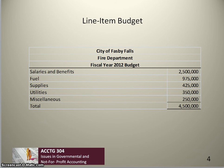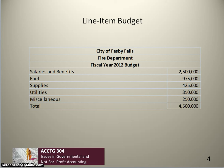Looking at our fire department, if it were to adopt a line-item budget, it might look something like this — total appropriations broken down by salaries and benefits, fuel, supplies, utilities, miscellaneous, and the total. The advantage of a line-item budget is that it's very easy to use throughout the year. When it comes time to purchase supplies, it's easy to look in the supply account and determine whether there are sufficient appropriations remaining to make a proposed purchase.